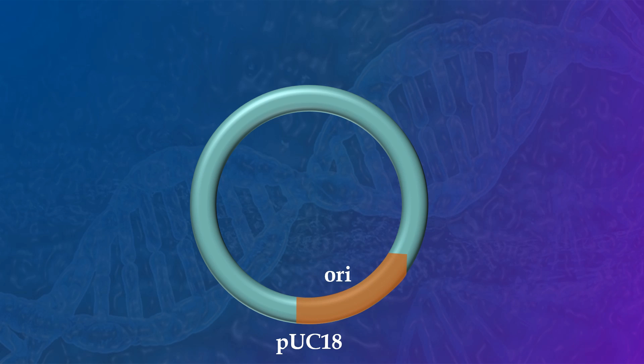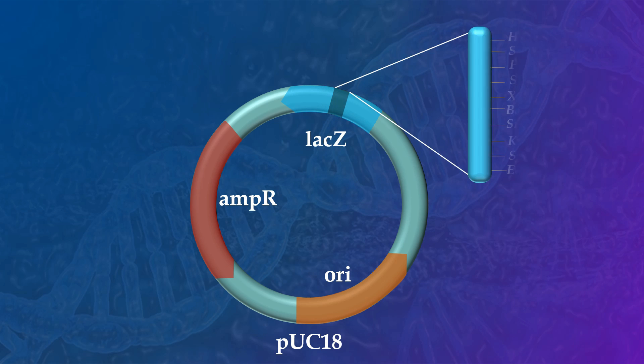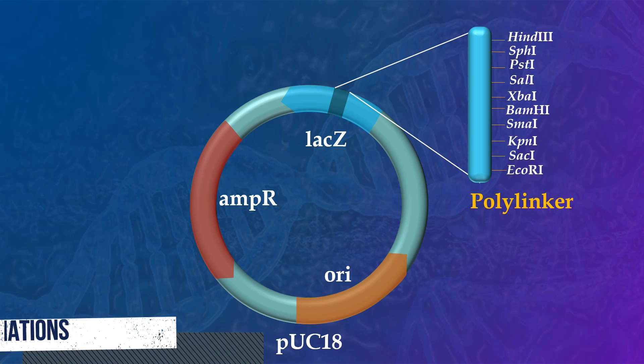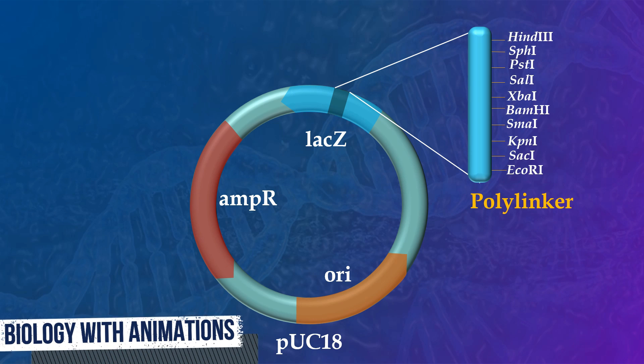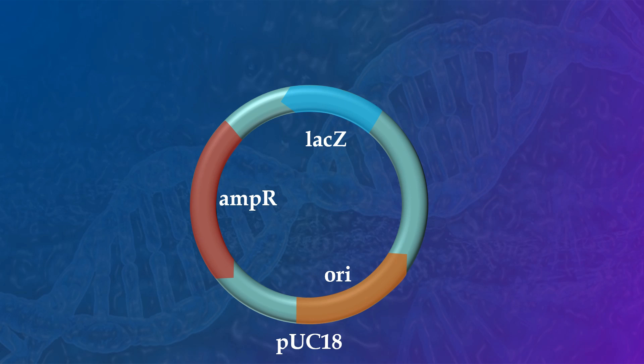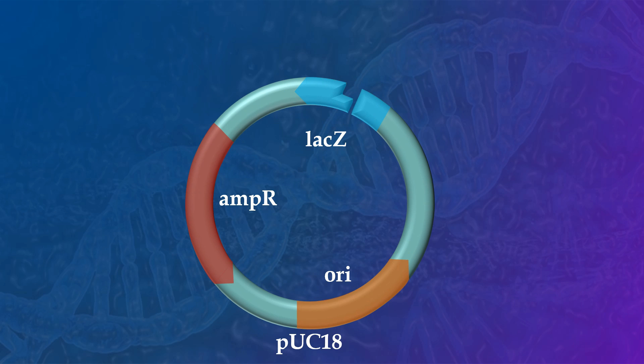An origin of replication that enables the plasmids to replicate independently of the bacterial cell cycle. A drug-resistance gene, such as the ampicillin-resistance gene. And a region where DNA can be inserted, such as the LAC-Z gene, which contains multiple cloning sites, also called a polylinker, consisting of a short segment of DNA with numerous restriction sites. Each restriction enzyme recognizes its specific sequence of nucleotides within the multiple cloning sites of the LAC-Z gene.